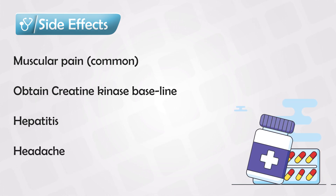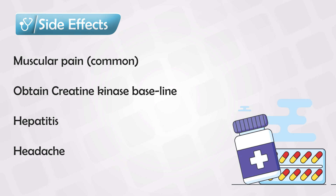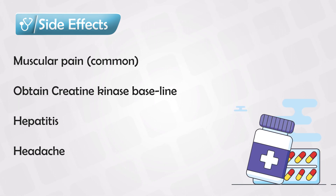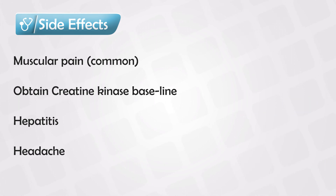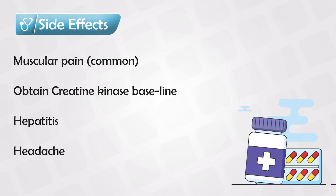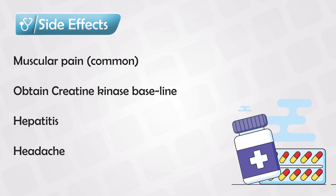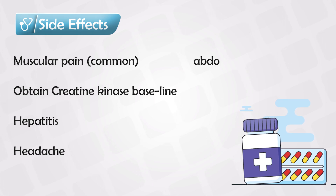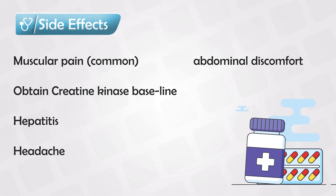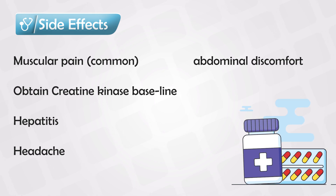Headache, especially in patients prone to having headaches — for example, if somebody is known to have migraine headaches, statin medications can trigger these symptoms. Abdominal upset, simply having either diarrhea or constipation with symptoms of bloating, is very common for pretty much all medications.